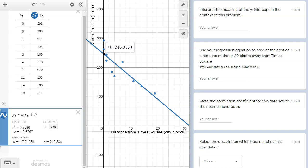In other words, the distance away from Times Square is zero, and the cost on the y-axis is $246.34. So the y-intercept in this story is the cost of a hotel room at Times Square, or a distance of zero blocks away from Times Square.